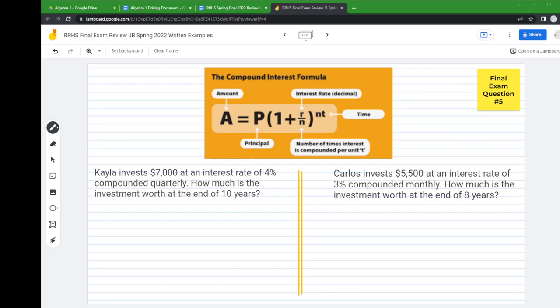In this problem set, it's a compound interest problem. Here we have the compound interest formula, super important. Notice that A is the final amount. P is the principal, which is the starting amount. The letter R is the interest rate.